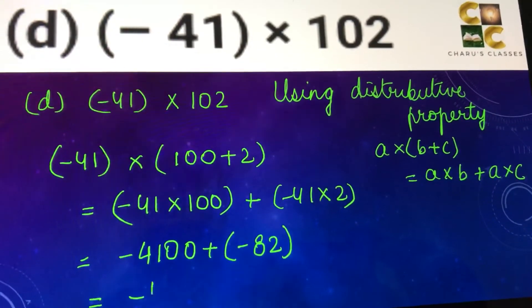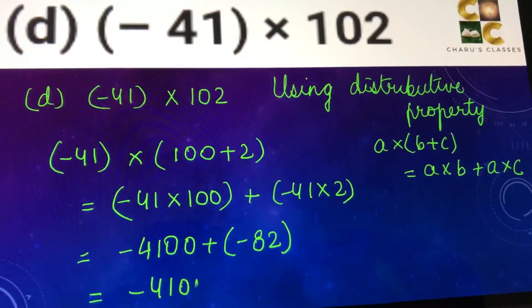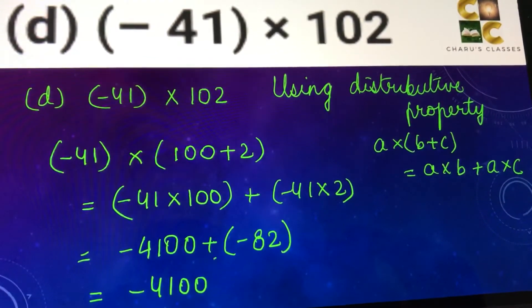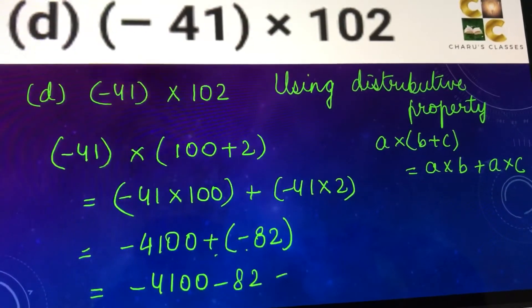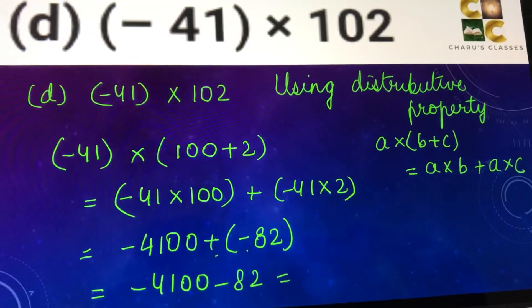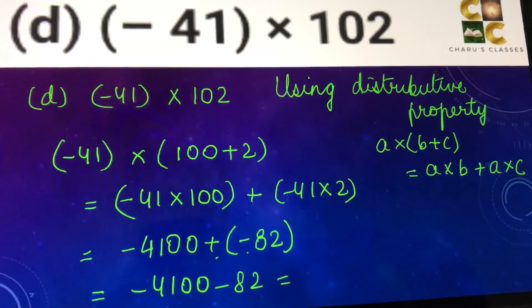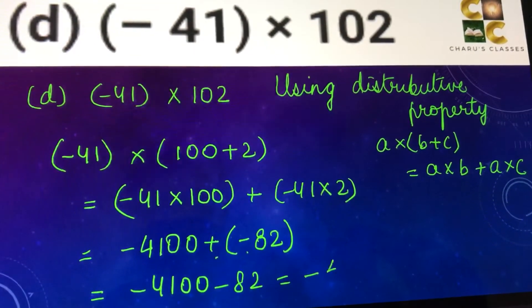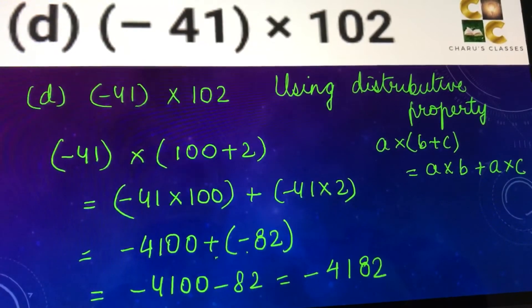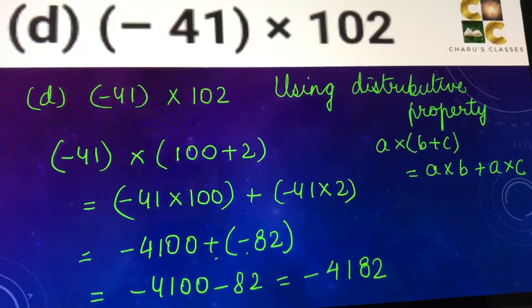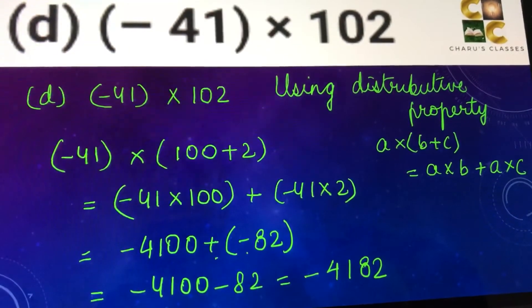So minus 4100, and this plus minus is minus 82. Two negative numbers get added up with the negative sign. So the answer is minus 4182.